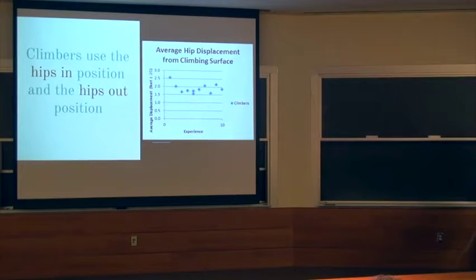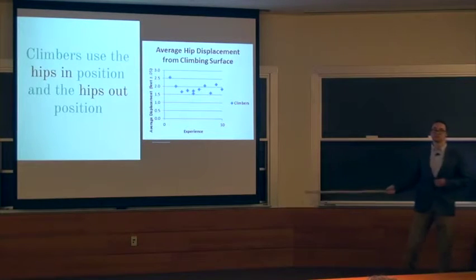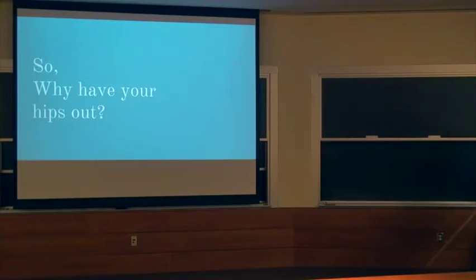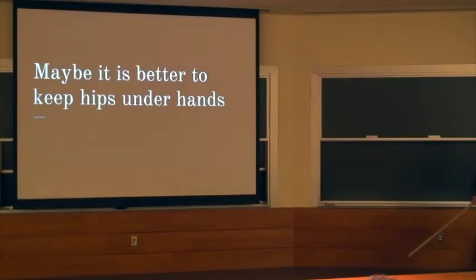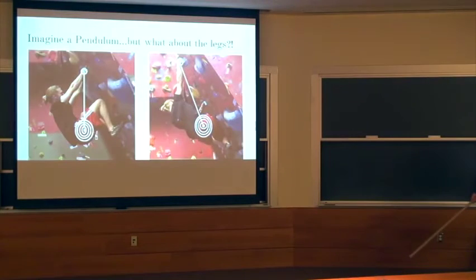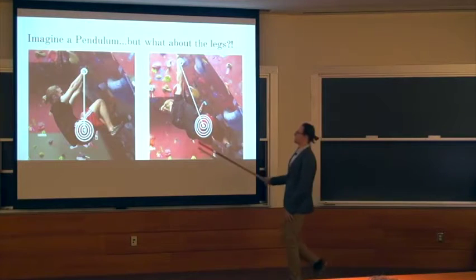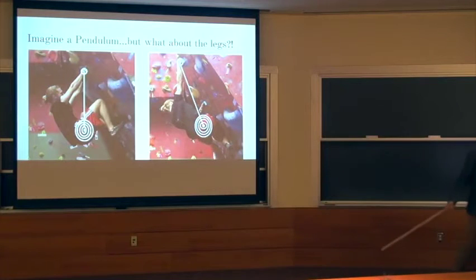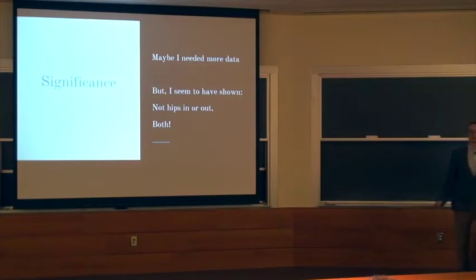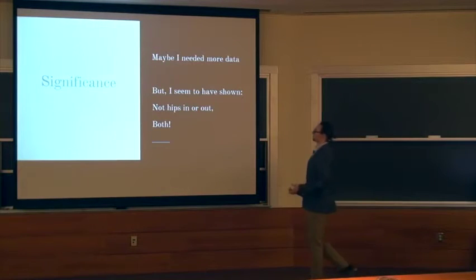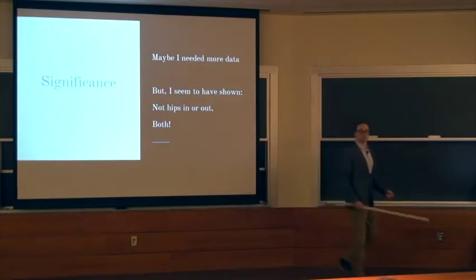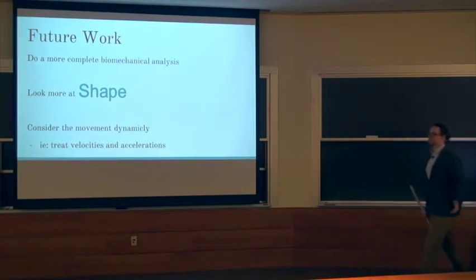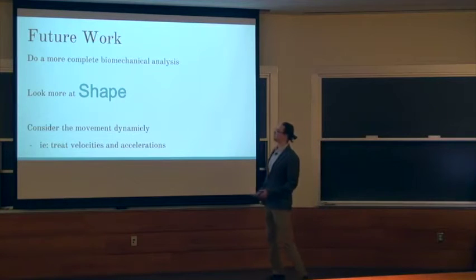So climbers use, from my data, I see that climbers use the hips in position and the hips out position. So why would you want to have your hips out ever? And again, maybe it has something to do with this idea of a pendulum. Maybe it is just more efficient to be opposing gravity kind of directly like that as opposed to out to the side. But I don't really know. So kind of the significance of my project was basically that climbers utilize both these positions. And it's not one or the other that seems to be beneficial in all circumstance. And I think this is due to the complexity of rock climbing and the variety of movements that you find yourselves in.